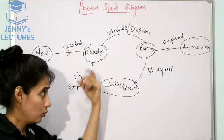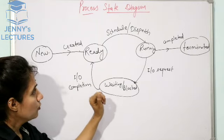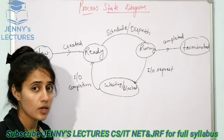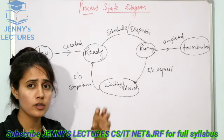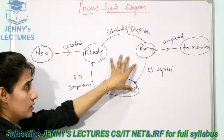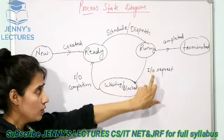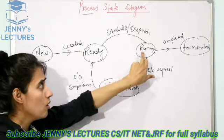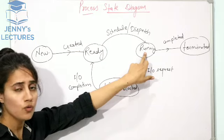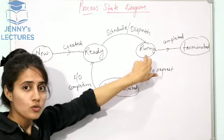This basic five-state model is for non-preemption. Non-preemption means you cannot forcefully remove a process from the CPU. If the process is running, it can only go to the waiting state if it needs an I/O device, or it can go to the terminated state. You cannot forcefully remove a process from the CPU.